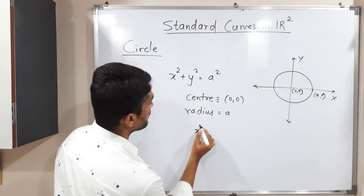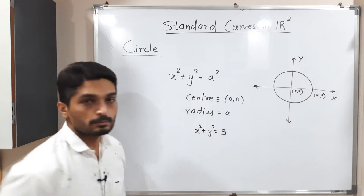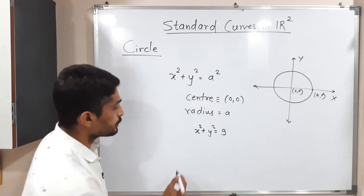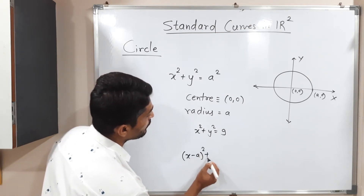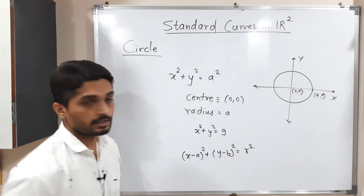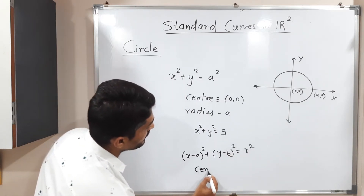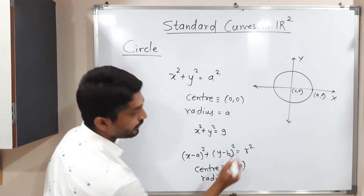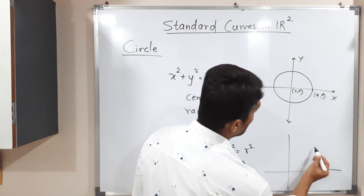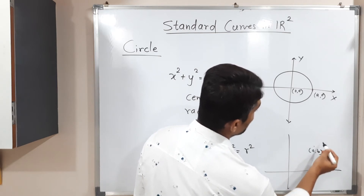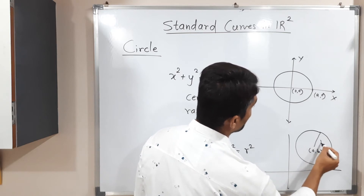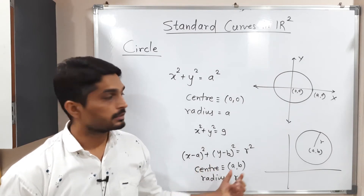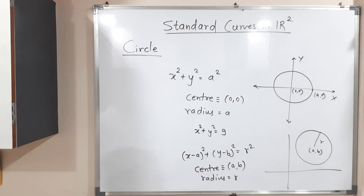For example, when you have x² + y² = 9, this is the equation of a circle with center at the origin and radius 3, since 9 = 3². The standard equation of a circle is (x − a)² + (y − b)² = r². This is the equation of a circle with center (a, b) and radius r. In the first case, the center is at the origin; in the second, the center is at (a, b) with radius r.